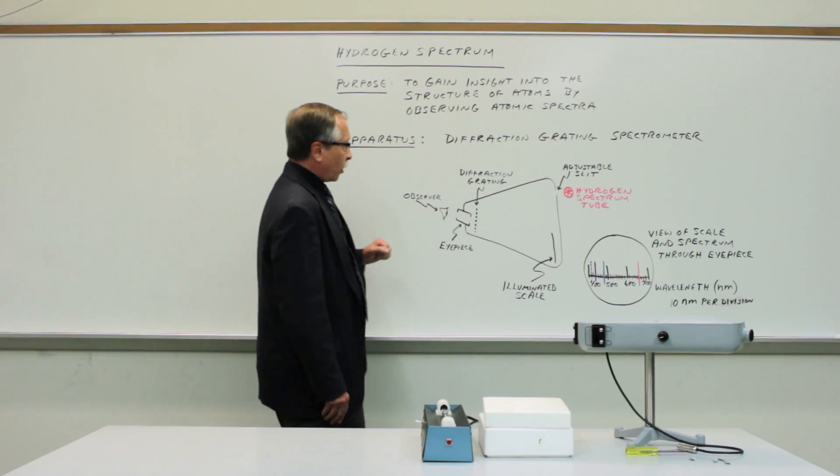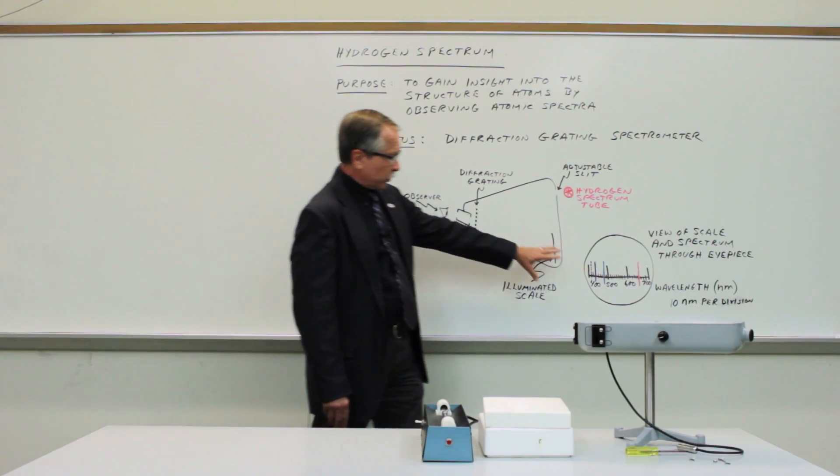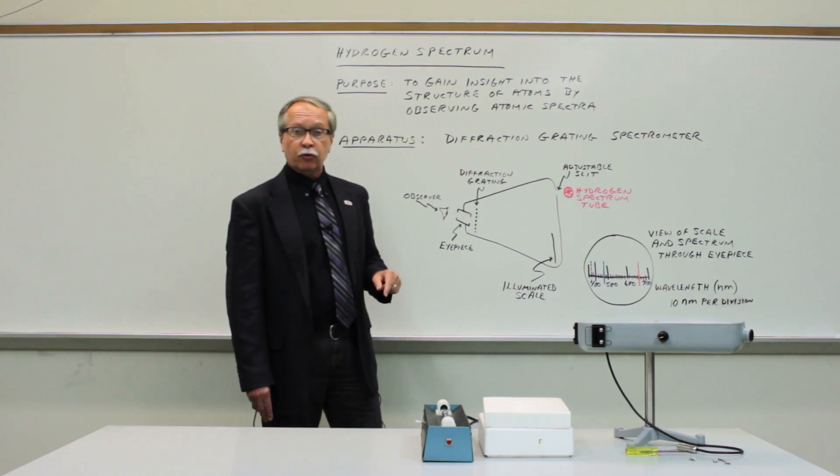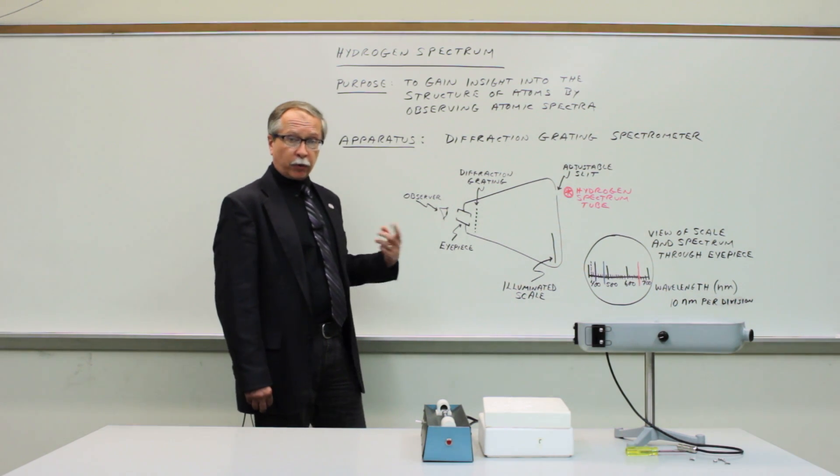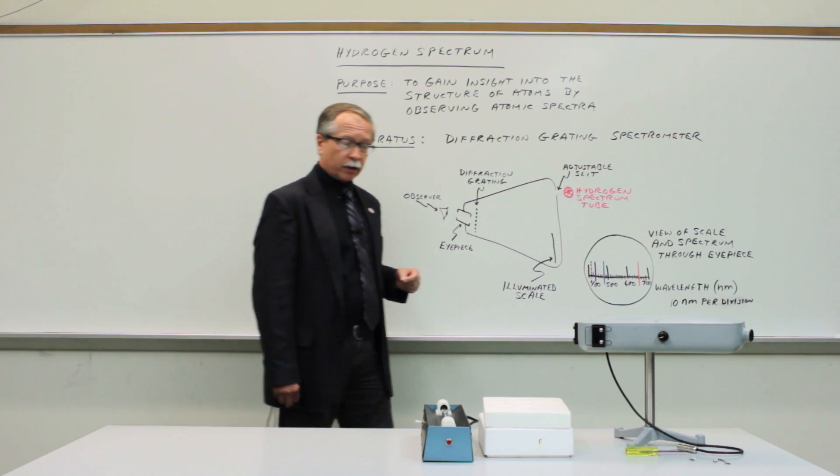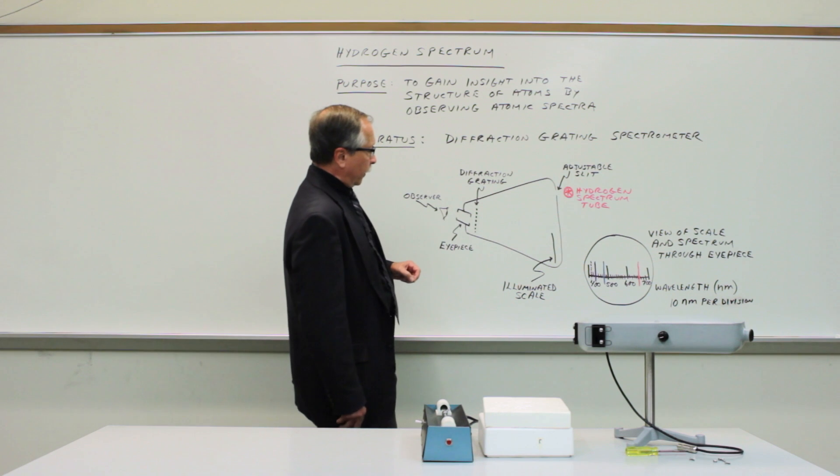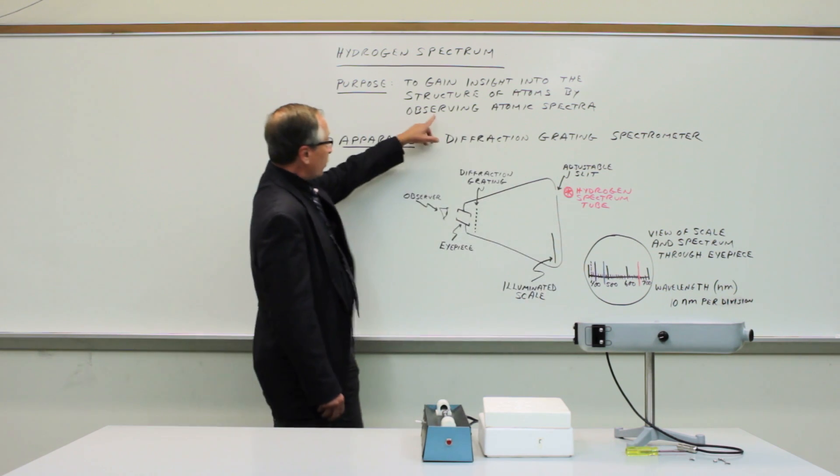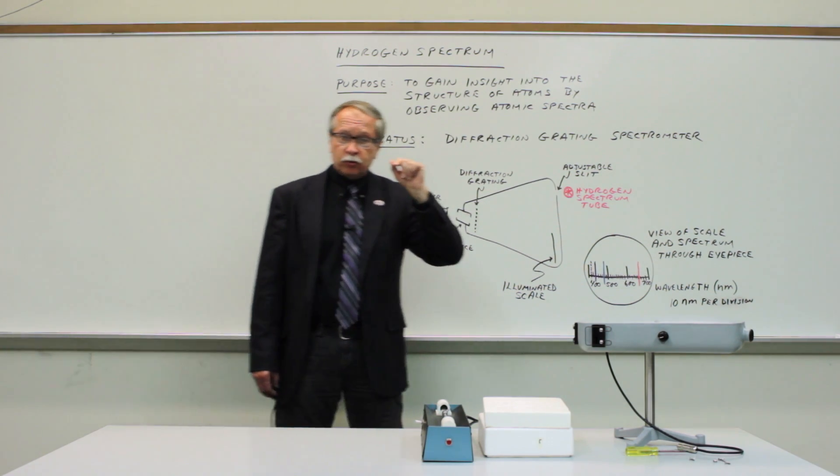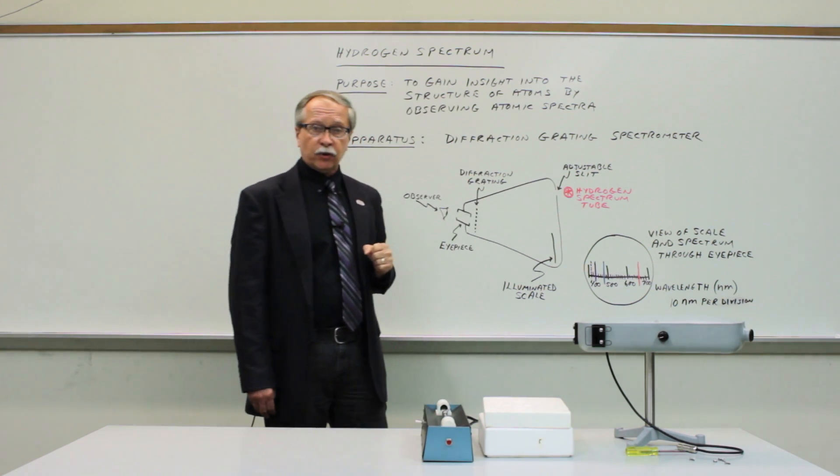So just to summarize, you make measurements of the three or four visible lines in the hydrogen spectrum. Record them as precisely as you are able to do with some estimate of the uncertainty in the reading. And then we will analyze the data and be able to gain some insight into the structure of atoms by analyzing the spectrum.